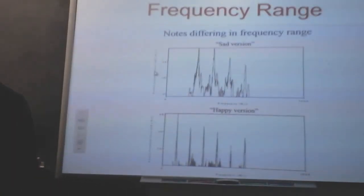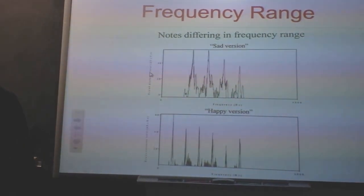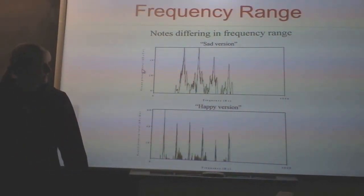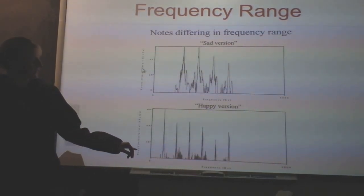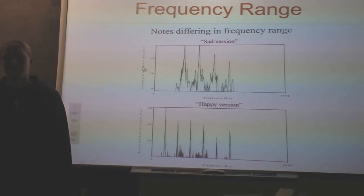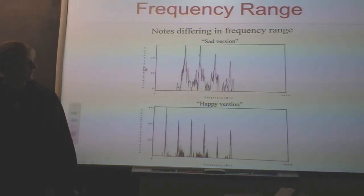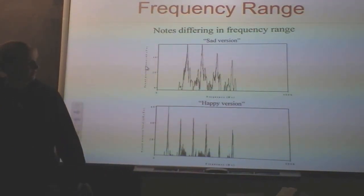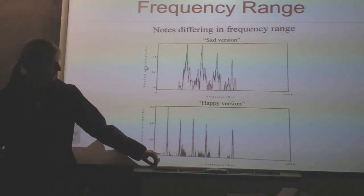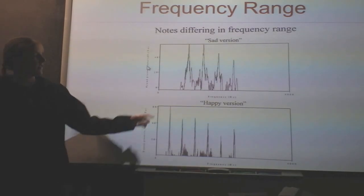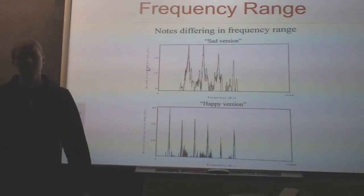These were graphs of frequency range, and this is also a graph of sound pressure versus time. The frequency range is just how many different frequencies are found within each of the individual notes. We can see from the happy that the range of frequencies was greater, but the sad version had a greater number of frequencies at a higher intensity.